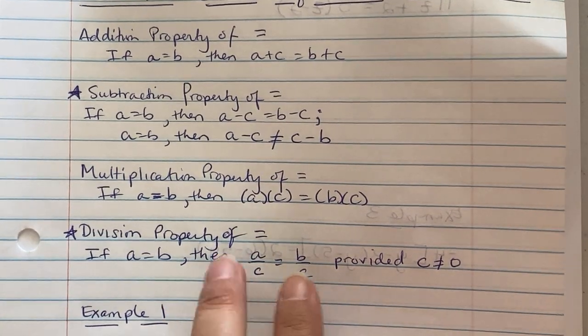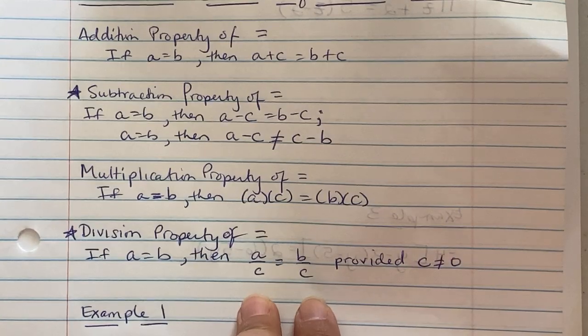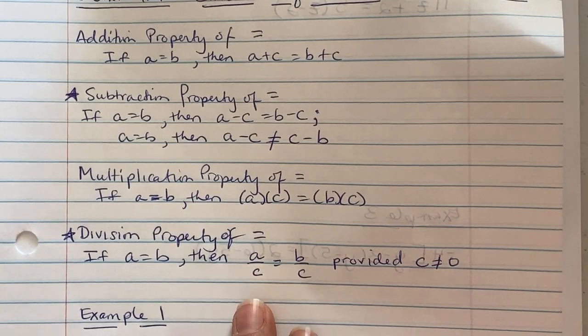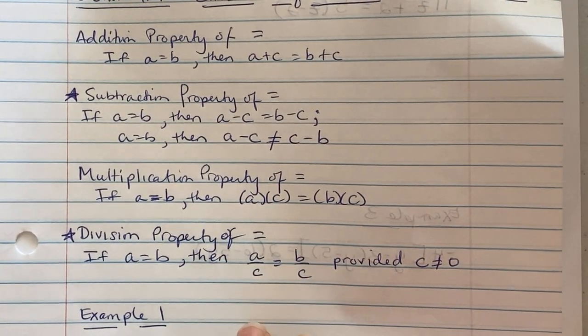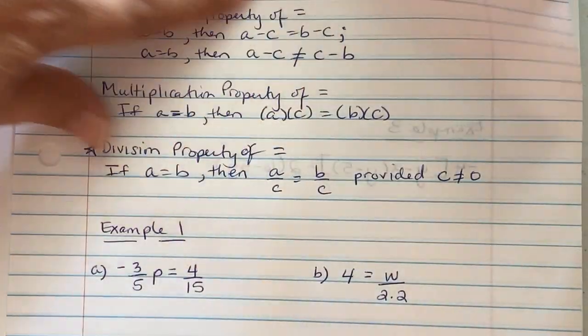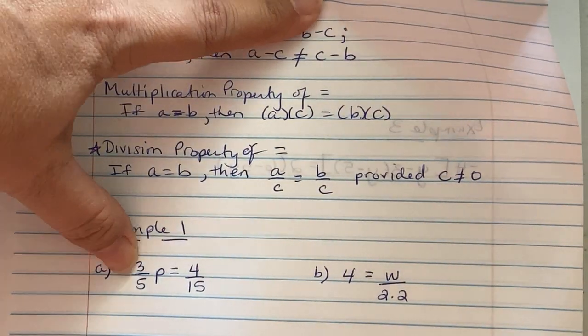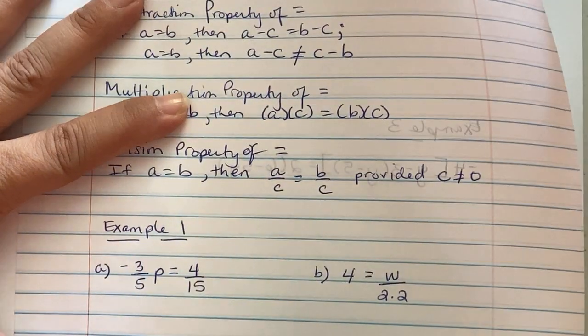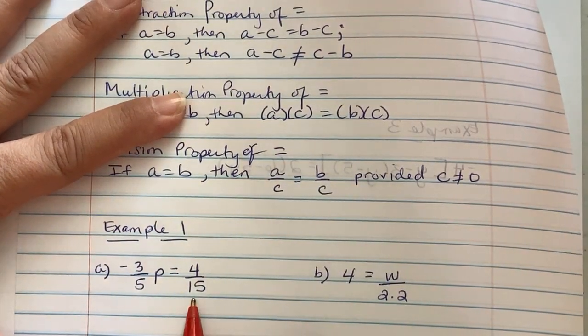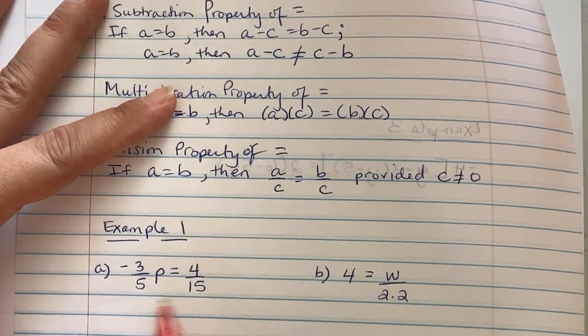So we can never divide by zero unless you are doing limits of a function, and at that point you're taking pre-calculus. Right now we're not. Example one: it says negative three-fifths p equaled four-fifteenths.